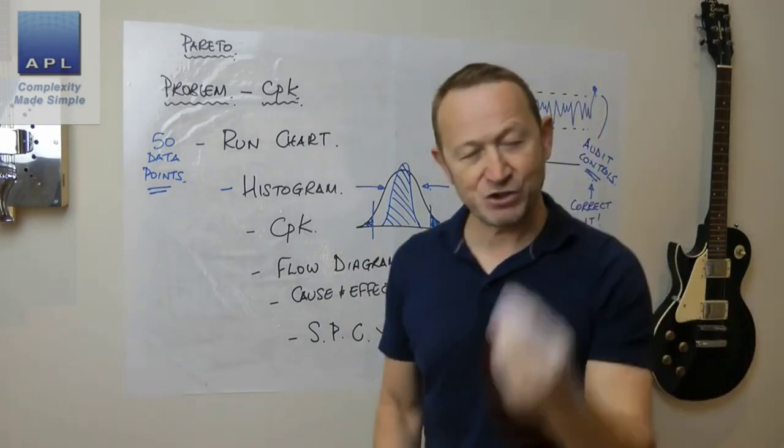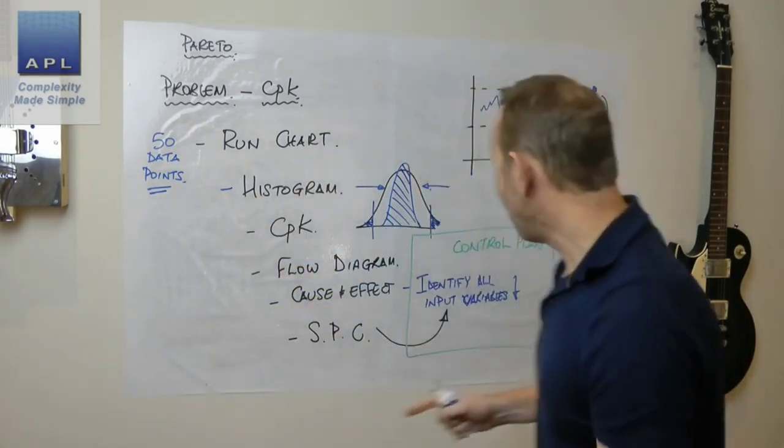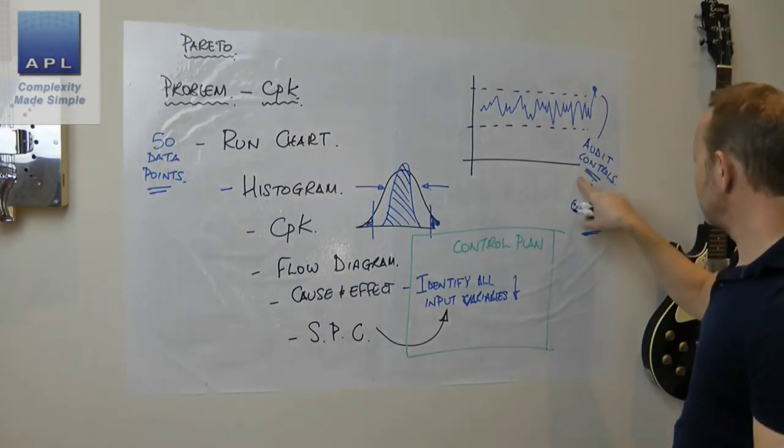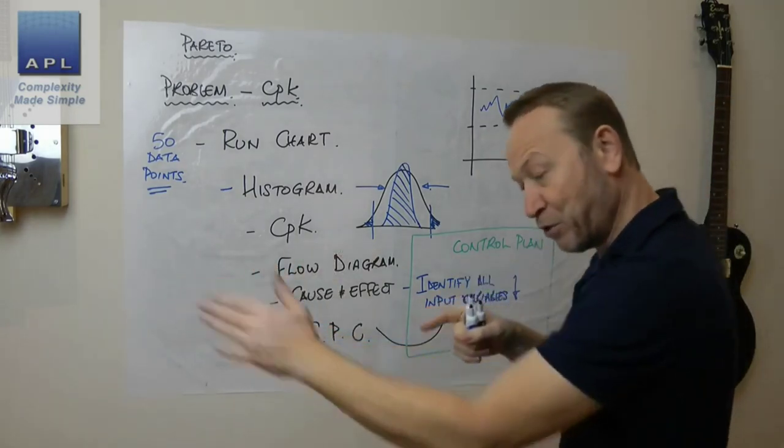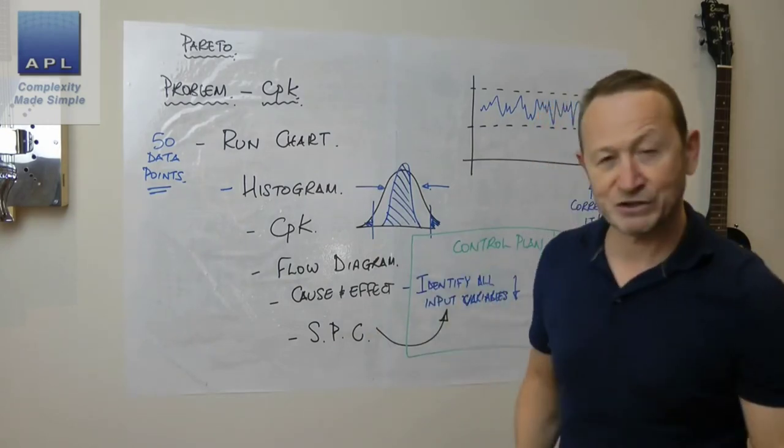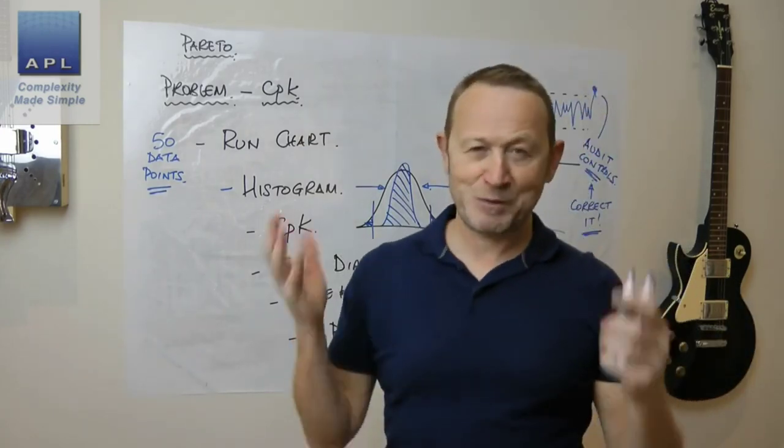In other words, we put it back to standard. We don't adjust the process - that's not allowed. SPC is not permission to fiddle with settings. We're going to find a control signal, audit the controls, and when one's gone wrong, we'll correct it and put it back to standard.